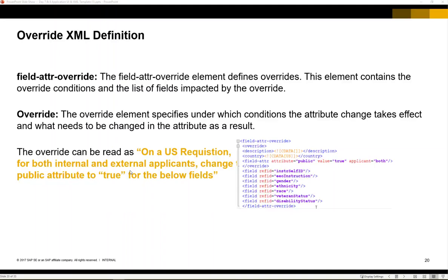I would recommend reading all overrides beginning with 'on a' followed by the job requisition country — so 'on a US requisition.' In this example, if the country is set to US we want to change these fields to be public equals true. But for example if the requisition country was Germany, these fields will remain public equals false because the override would not take effect — the criteria has not been met.